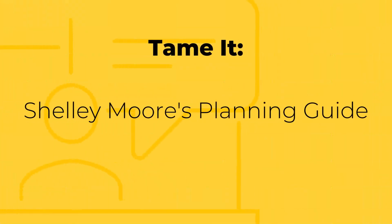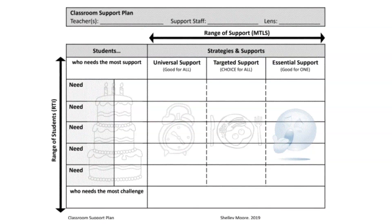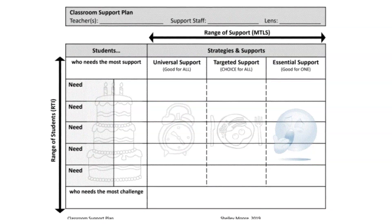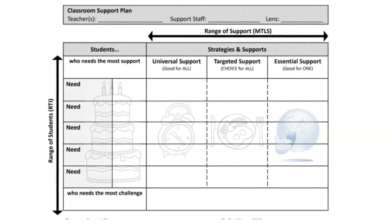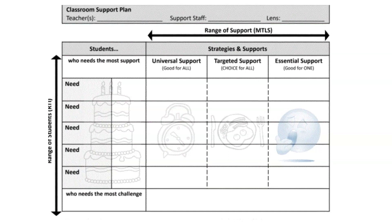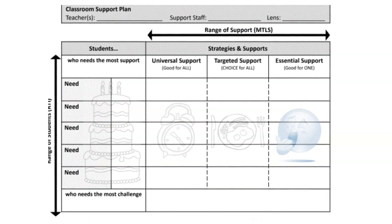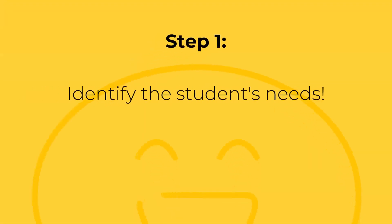One way we can tame this barrier is with the use of Shelly Moore's planning guide. Using this graphic organizer or template for organizing information about our learners helps to create ease when designing universally. Step 1: Identify the student's needs. If we anticipate the needs of students before they are not successful, we are inadvertently planning universally.